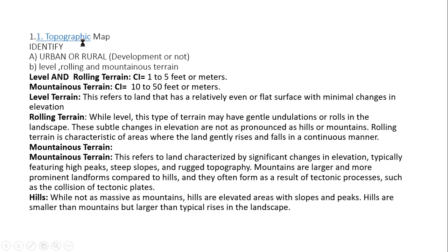In between level and mountainous there is rolling terrain — not level and not as steep as mountains. By definition, rolling terrain has gentle undulations or rolls in the landscape. The changes in elevation are not as pronounced as hills or mountains; rolling terrain is characteristic of areas where the land generally rises and falls in a continuous manner.